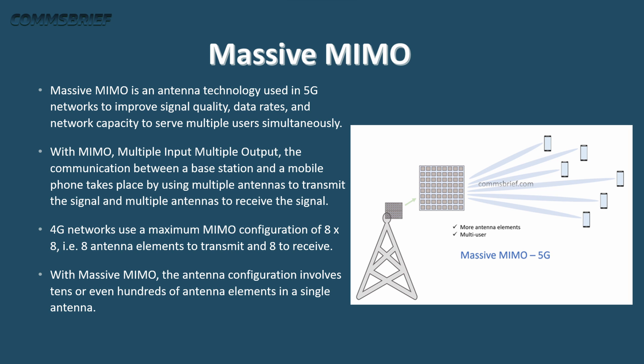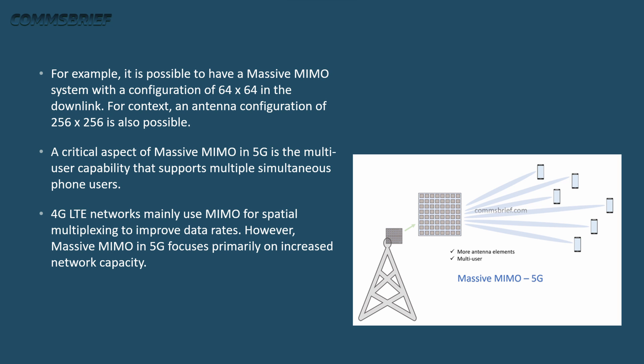Does 'multiple' mean two, four, eight, a hundred, a thousand? To give some context: 4G LTE networks use a maximum MIMO configuration of 8×8, meaning eight antenna elements to transmit and eight to receive. With Massive MIMO, the antenna configuration can be huge, involving tens or even hundreds of elements. For example, configurations of 64×64 or even 256×256 are possible — 256 elements to send and 256 to receive. That's a massive number, hence the word 'massive.'